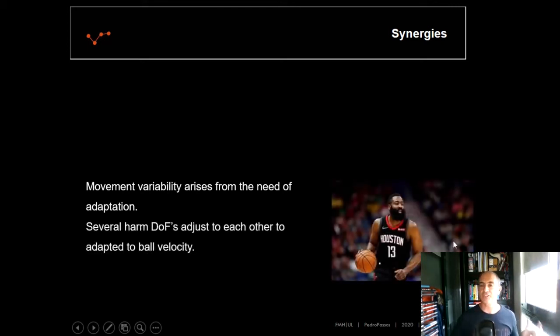Let's see the dribbling action, for instance. There are several arm degrees of freedom that will adjust to each other to adapt to what? To the ball velocity upwards. When we do a dribbling action, we need to control the height of the ball. To do this, to stabilize the height of the ball, our shoulder and our elbow need to adjust to each other in order to stabilize these movements. So probably, we can get synergies by the adjustment of the shoulder, reciprocally adjusting to the elbow movement to stabilize the height of the dribbling task.